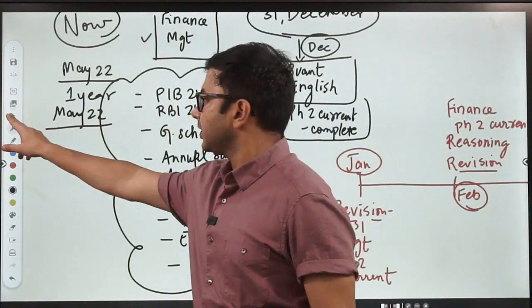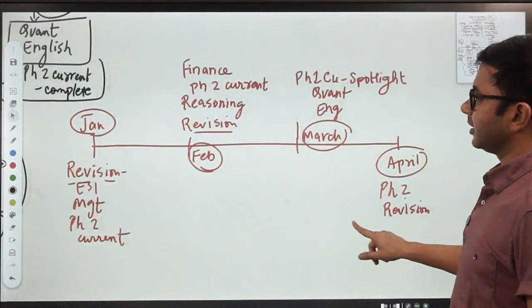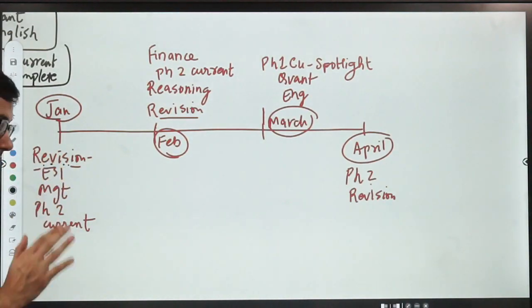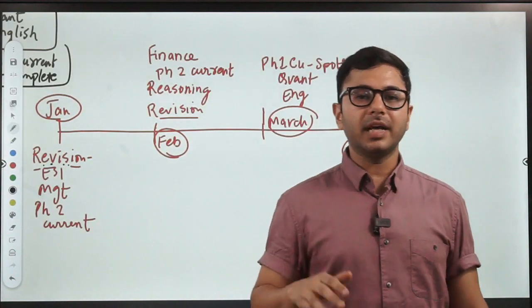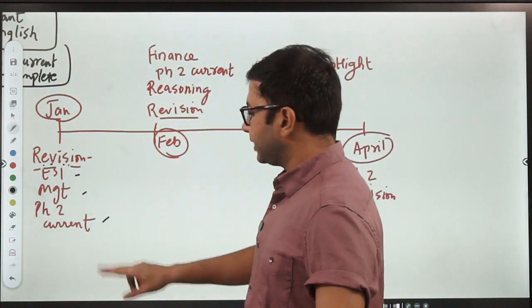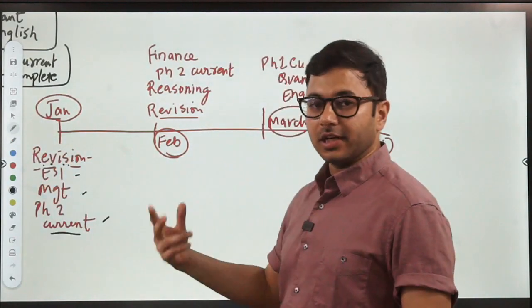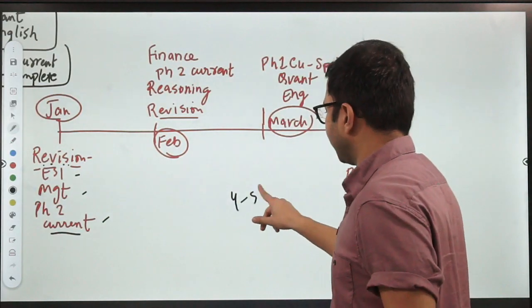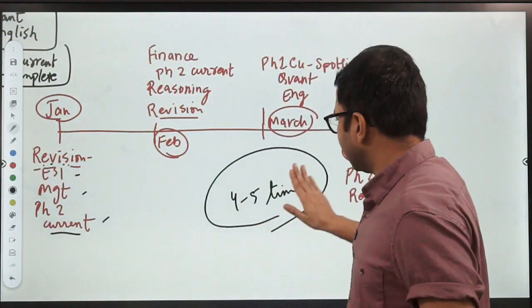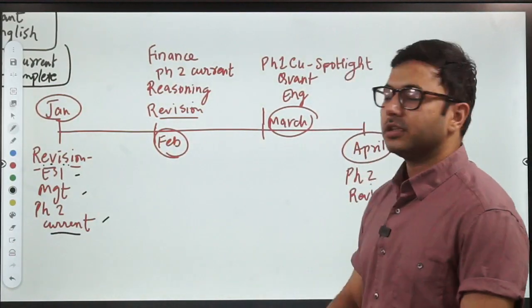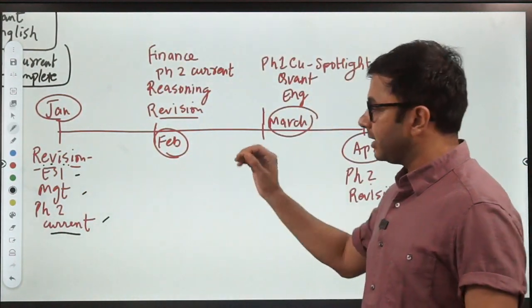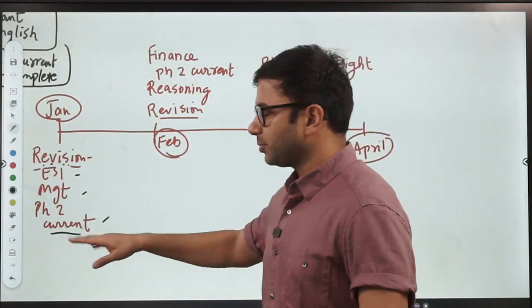Now let's come to the next timeline which is January onwards. Number one, in January you start with revision. Because now we are done with the entire syllabus by December end. Even if you start now and cover with me by December end, you will be done with majority of the syllabus. Then your revision will start. You'll start with ESI and management revision, plus phase 2 current that you covered in December. You will start revising that again. We have to revise at least four to five times. Because if you don't revise, you will not remember and you will not be able to fetch marks in the final exam. This is a reality. Majority students don't push revision a lot, don't give a lot of importance to revision and that's why they fail.